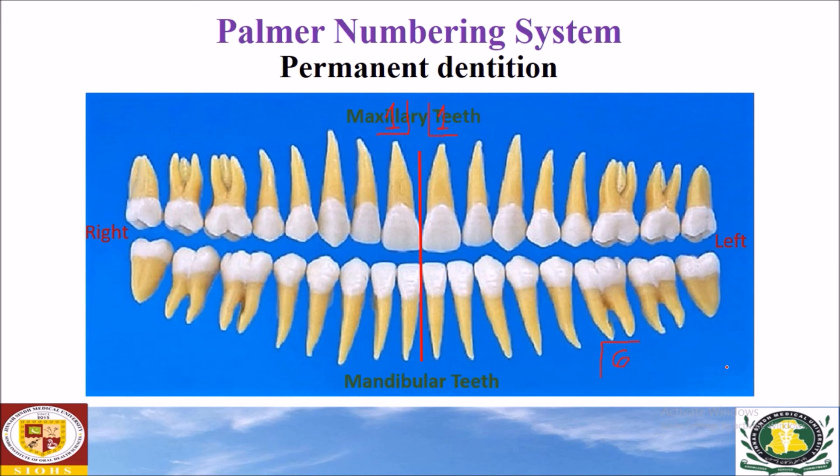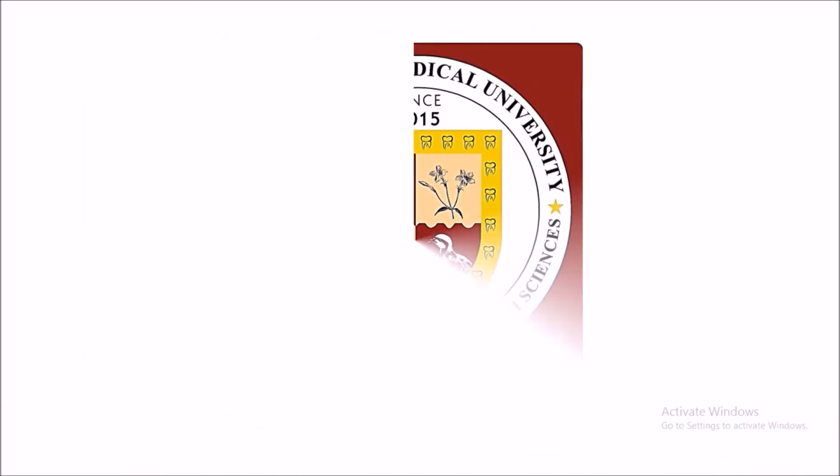It is very important to have a clear understanding of individual tooth morphology, because sometimes you have to number a tooth in the deciduous dentition, the mixed dentition, or in cases of missing teeth. Individual tooth morphology is very important in order to number a tooth correctly. Thank you very much for watching.